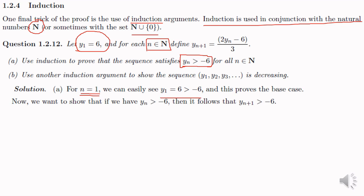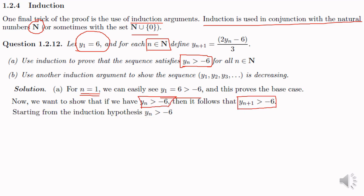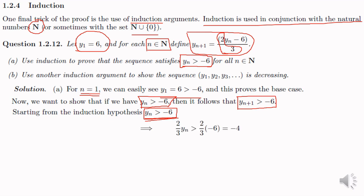Now we want to show that if yn greater than minus 6, then it follows that y(n+1) is greater than minus 6. So we will assume that yn is greater than minus 6. Now y(n+1) from the definition is (2yn minus 6) divided by 3. To derive y(n+1) from yn, we multiply both sides of this inequality by 2/3, because we have a 2/3 associated with yn in y(n+1).